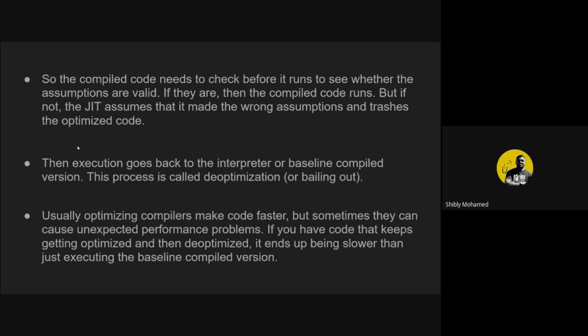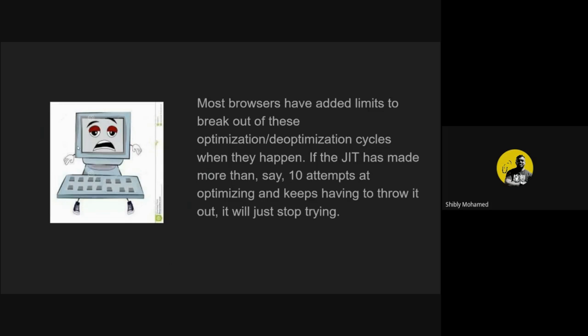Optimizing compilers usually make code faster, but sometimes they can cause unexpected performance problems. If code keeps getting optimized and then de-optimized, it ends up being slower than just executing the baseline compiled version. Most browsers have added a limit to this optimization cycle — for example, if the JIT has made more than 10 attempts at optimizing and keeps throwing it out, it will just stop trying and will not optimize again if the type keeps changing.